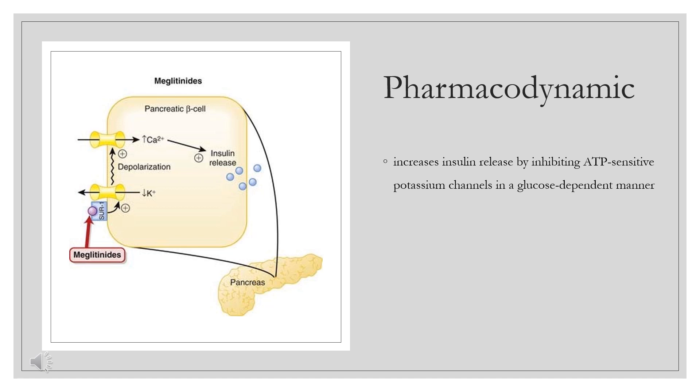High glucose concentrations cause ATP-sensitive potassium channels to close, resulting in membrane depolarization and opening of L-type calcium channels. The influx of calcium ions stimulates calcium-dependent exocytosis of insulin granules. Repaglinide increases insulin release by inhibiting ATP-sensitive potassium channels in a glucose-dependent manner.